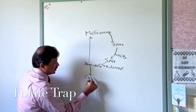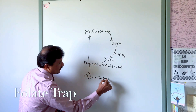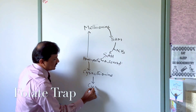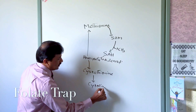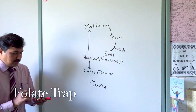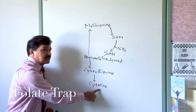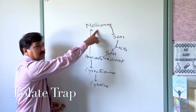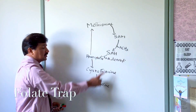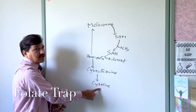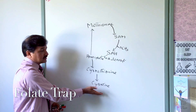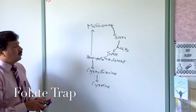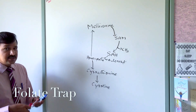Going towards cysteine formation, homocysteine is initially converted into cystathionine, and cystathionine is further converted to cysteine. Cysteine is a non-essential amino acid because methionine is an essential amino acid — as long as you consume methionine in the diet, you can synthesize cysteine in the body, which is why cysteine is not essential in the diet.